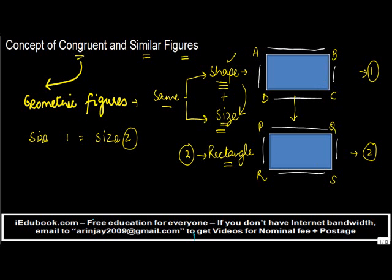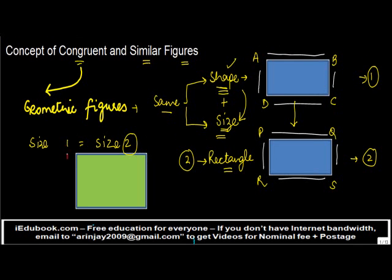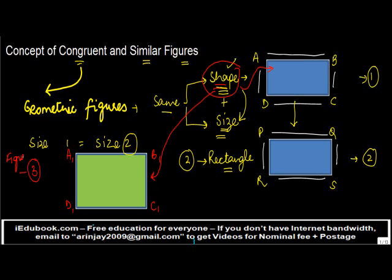Now let me add another rectangle over here. If I call this rectangle as A1, B1, C1, D1 — if I call it Figure 3 — the shape of Figure 1 and Figure 3 are the same, but is the size the same? If you look at it visually, you can very clearly say that Figure 3 is actually bigger than Figure 1. In such a case, we say that Figure 1 and Figure 3 are not congruent.